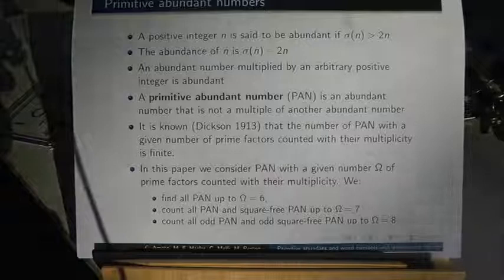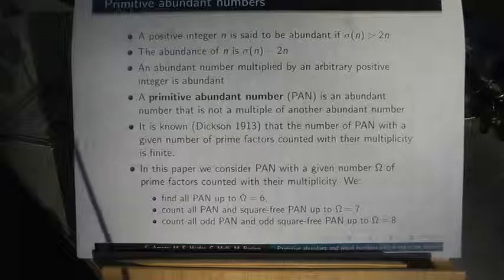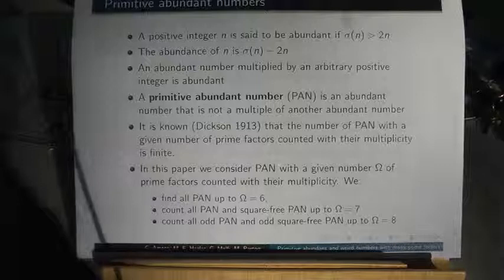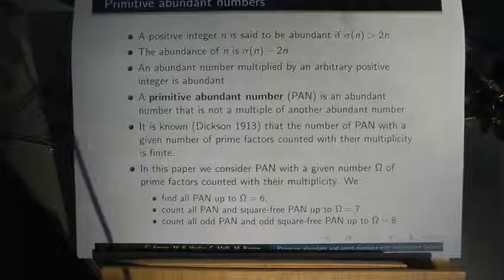In this paper we consider primitive abundant numbers with a given number of prime factors counted with their multiplicity, and we find all primitive abundant numbers up to 6 prime factors counted with their multiplicity.